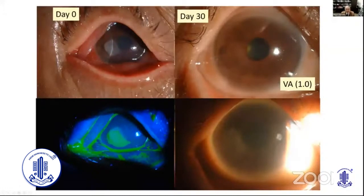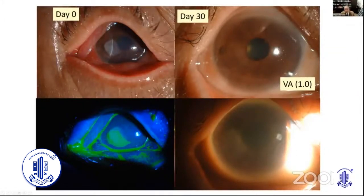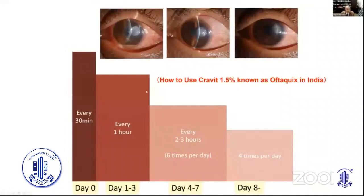Another case of Pseudomonas at a very early stage: at day zero Pseudomonas was identified, and after one month of treatment with levofloxacin 1.5 percent, the cornea became almost completely transparent.